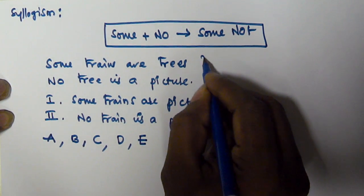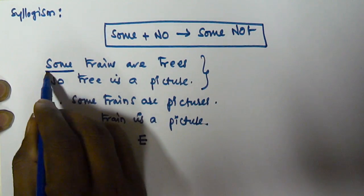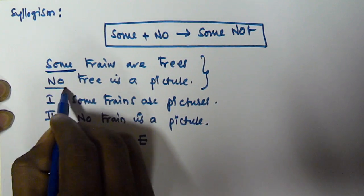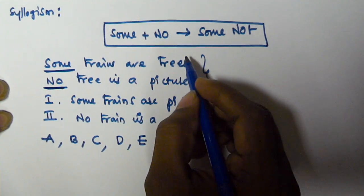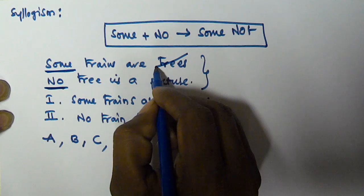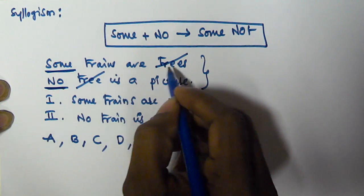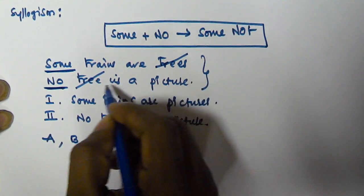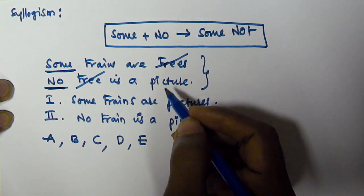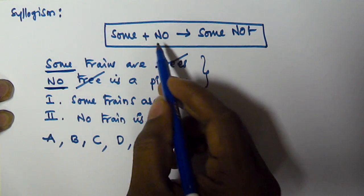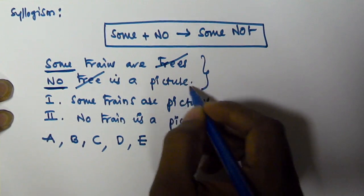Now looking at the two given syllogisms: the first one starts with 'some' and the second one starts with 'no.' The predicate of the first syllogism is 'tree,' which is equivalent to the subject of the second syllogism, which is also 'tree.' So we can apply the 'sum plus no equals sum not' rule.